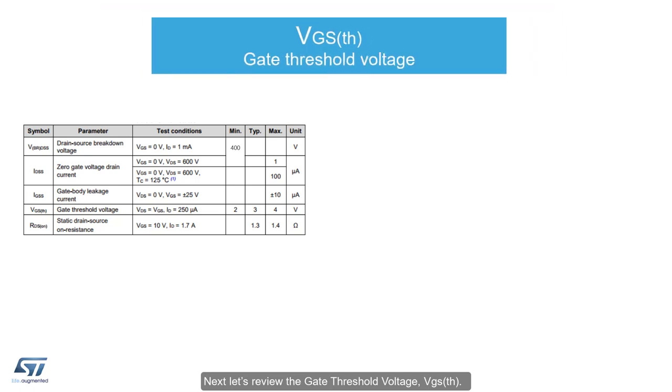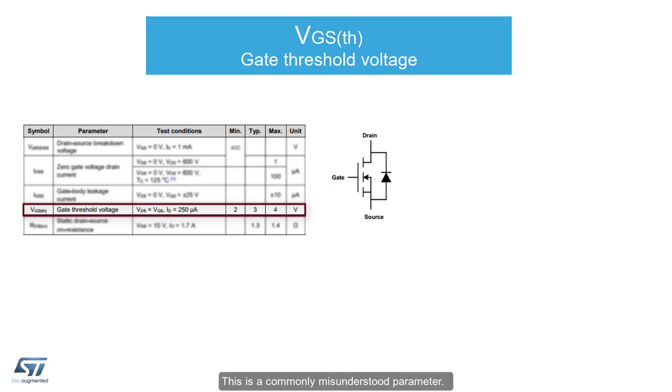Next, let's review the gate threshold voltage, VGS-TH. This is a commonly misunderstood parameter. The device is tested with the gate and drain connected, while the voltage source increases the voltage until a specified drain current begins to flow. Here we can consider the device to no longer be off. It's conducting current far greater than leakage current.